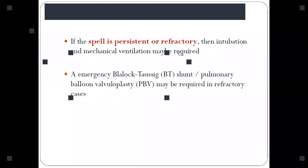If the spell is still persistent despite all the treatment, emergency intubation and mechanical ventilation may be useful, or emergency shunts can be used like a Blalock-Taussig shunt. Pulmonary balloon valvuloplasty may be required in refractory cases.